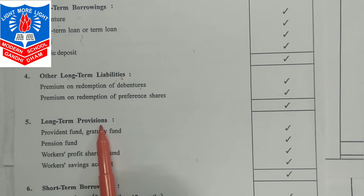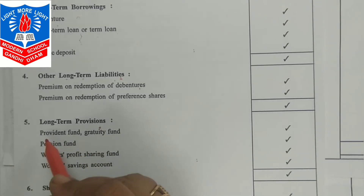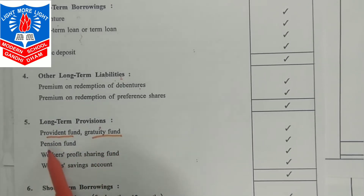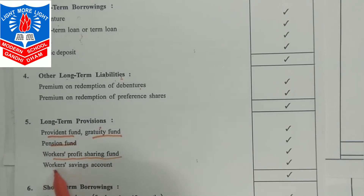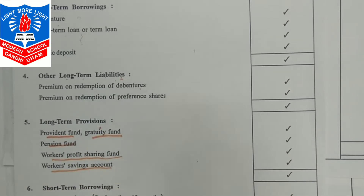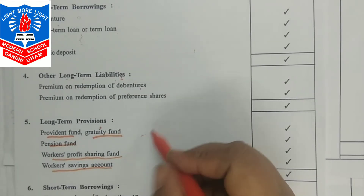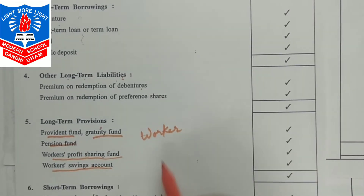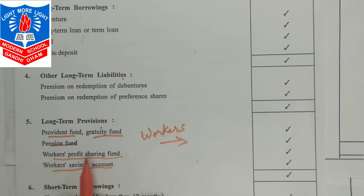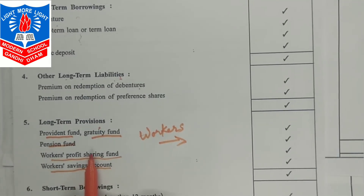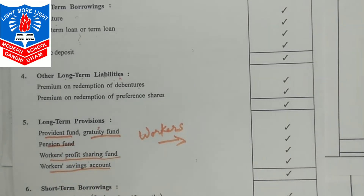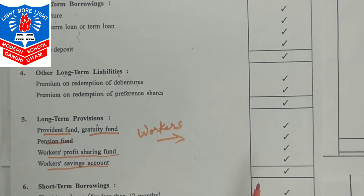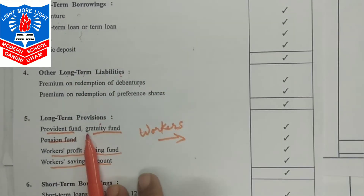Long-term provisions include provident fund for employees, gratuity fund, pension fund, workers' profit-sharing fund, and workers' savings account. In short, provisions are amounts kept for the welfare of workers or any amount related to workers to be paid in future. With this, our second main head — non-current liabilities — is complete.